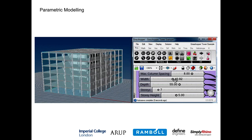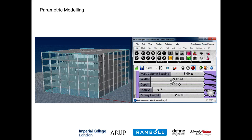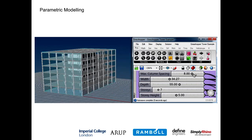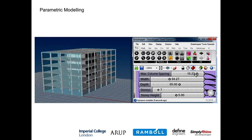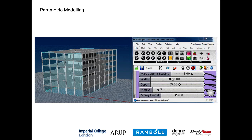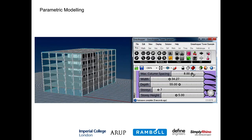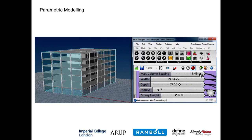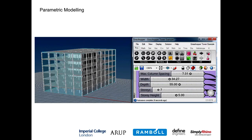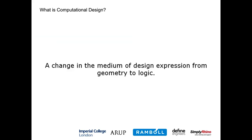We can build 3D models where that logic is embedded — simply adjusting the column spacing, the overall building width, or other parameters instantly regenerates the geometry without having to mentally work out the implications for every member. My personal one-liner definition: computational design is a change in the medium of design expression from geometry to logic. You're no longer working purely with geometry; you're working with the logical processes that define that geometry.